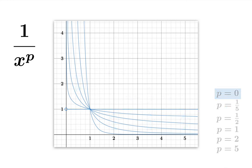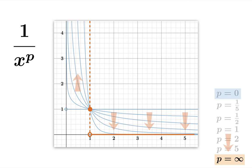Let's look at the other end of the spectrum — what happens as we let p grow without bound, letting p go off to infinity? The graph to the right of x equals 1 seems to be pushing towards the x-axis, while the opposite effect occurs to the left of 1 and to the right of 0. The limiting case is the constant function 0 to the right of 1, since 1 raised to any power is always 1, so every graph passes through the point (1, 1).